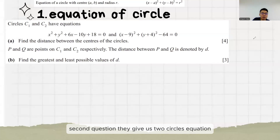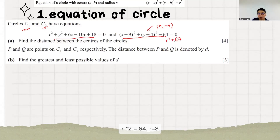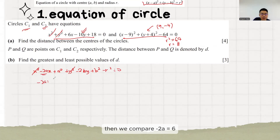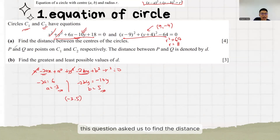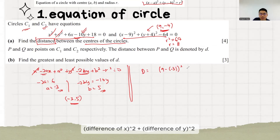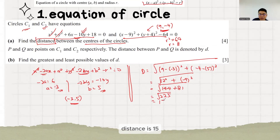The second question gives us two circle equations. For the first circle, it's easy — the center is x equals 9, y equals minus 4, and r squared equals 64. For the second circle, we expand the equation and compare. Minus 2a equals 6, so a is minus 3. Minus 2b equals minus 10, so b is 5. This question asks us to find the distance between the centers of the circles. The distance is the square root of the difference of x squared plus the difference of y squared. The distance is 15.